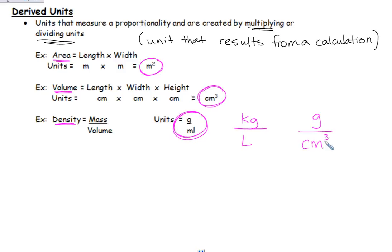So grams per cubic centimeter is a totally acceptable unit of density. Another thing that we should make note of is that one milliliter is equivalent to one cubic centimeter. So really like these guys are equivalent measurements. A milliliter is the same as a cubic centimeter.